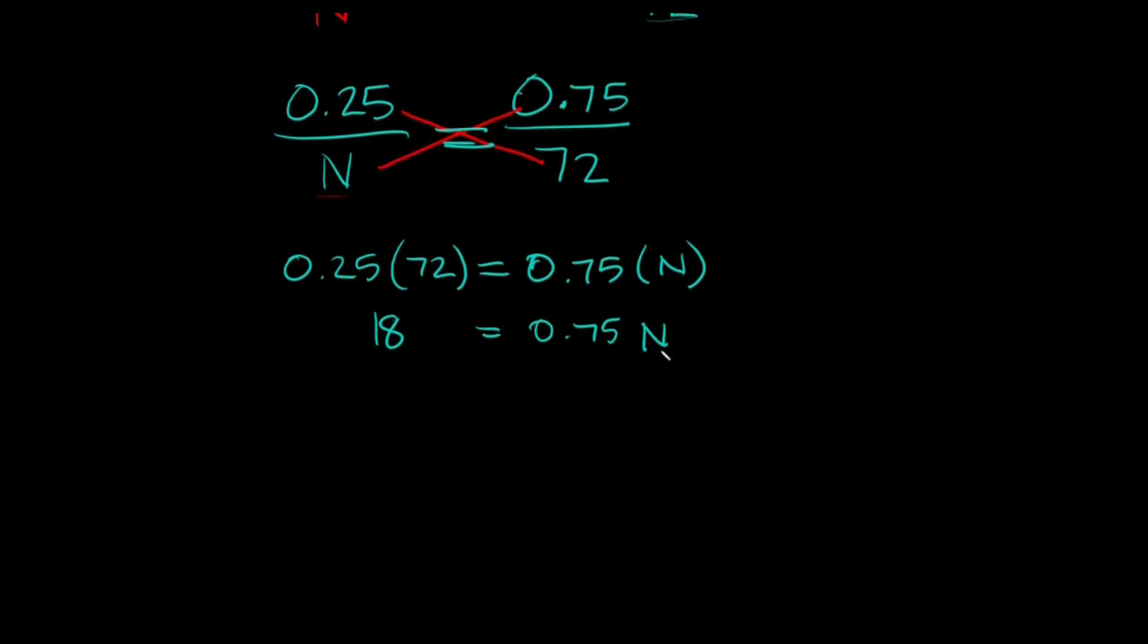Now in order to isolate this variable right here, n, we have to get rid of the 0.75. So in order to do that, since we're multiplying right here, in order to undo that we need to divide by 0.75.